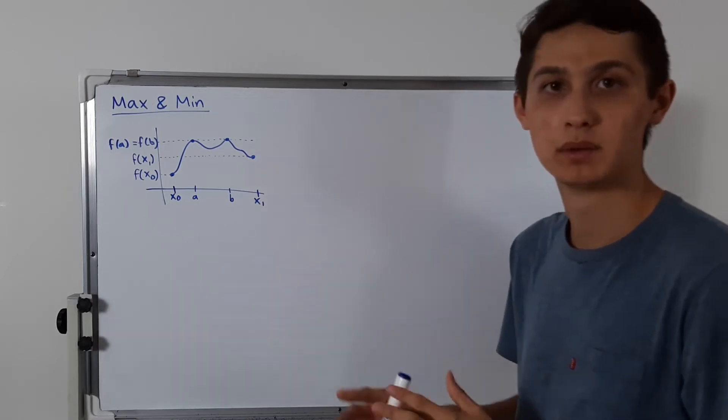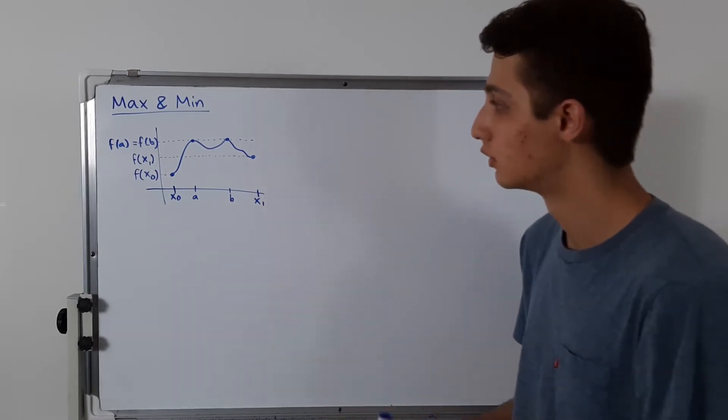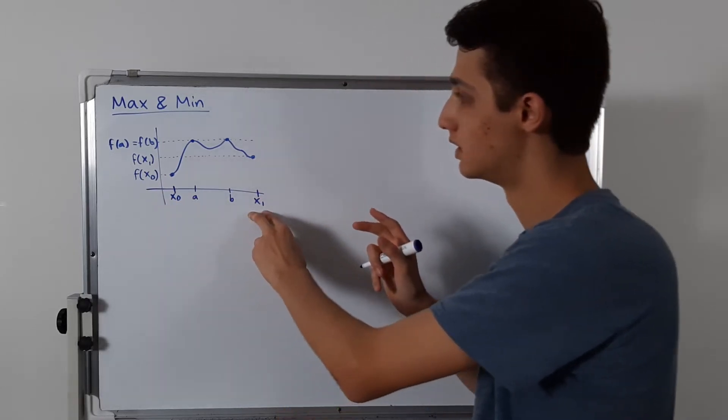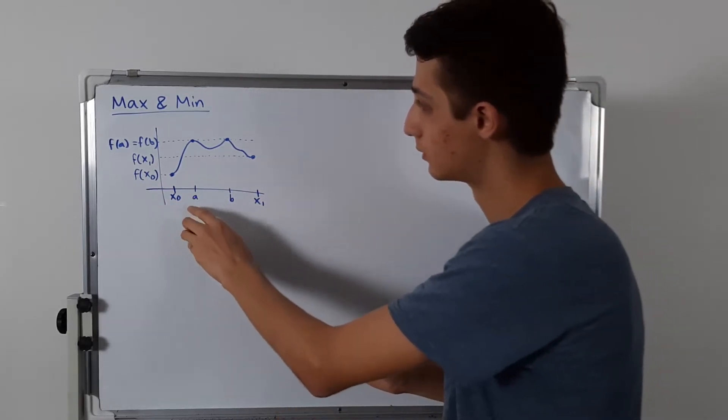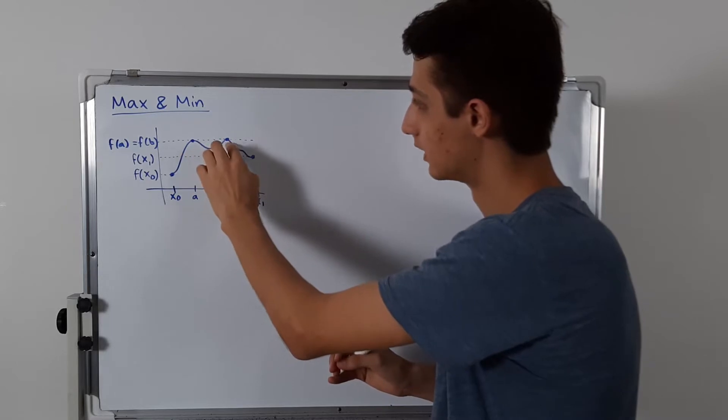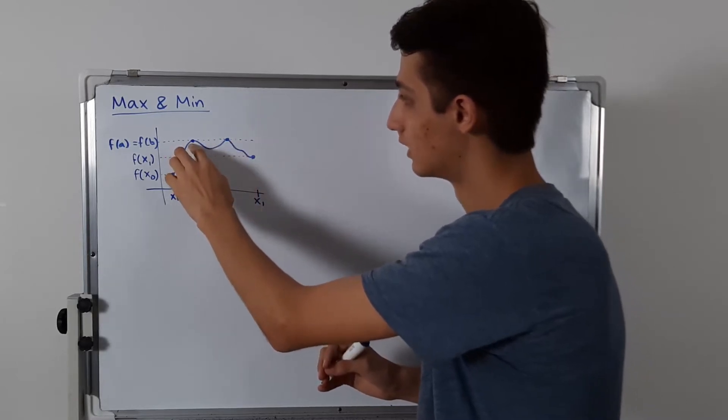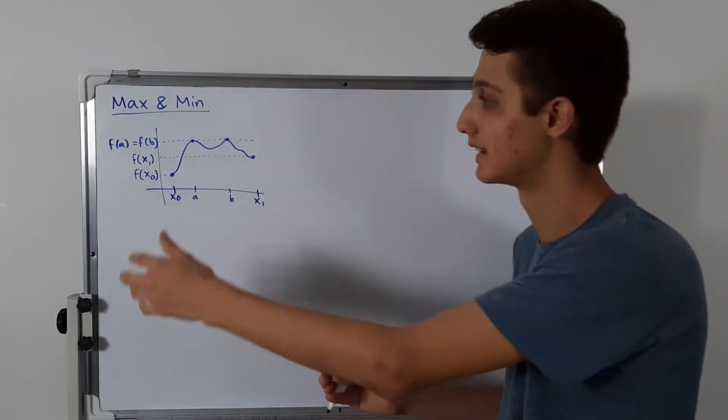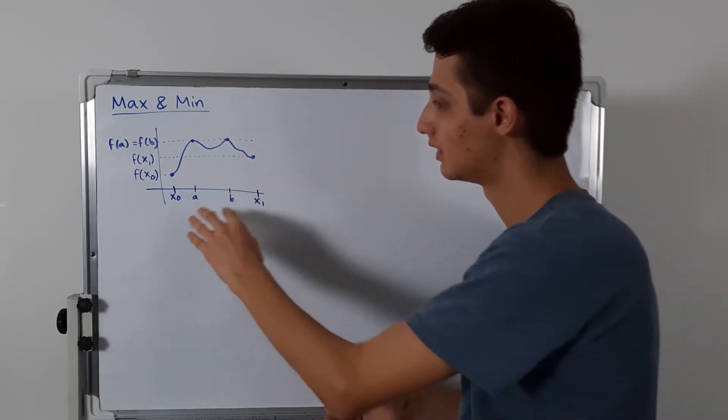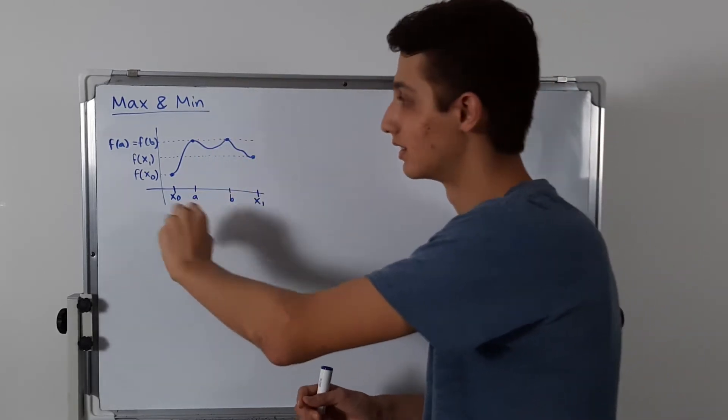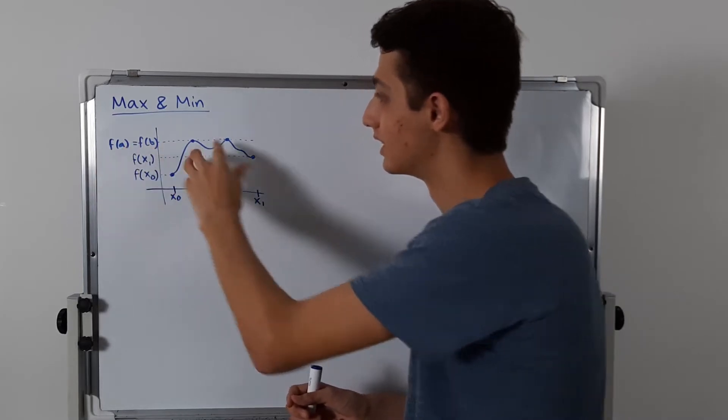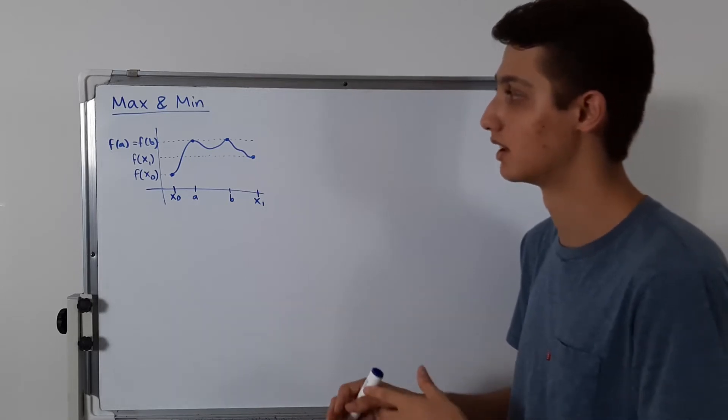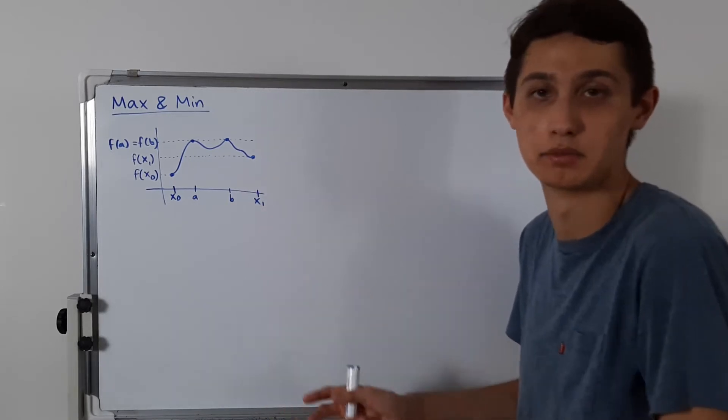So let me kind of explain more for anybody if they're lost. So we have this function on this interval from x0 to x1. And it reaches this point a here and this point b, and they're both the maximum, because that's the highest point. The function doesn't go any higher than that. But it's not that a and b are the maximum. It's actually f of a and f of b that are the maximum. They're the same, so you can just say the maximum is f of a, or the maximum is f of b.